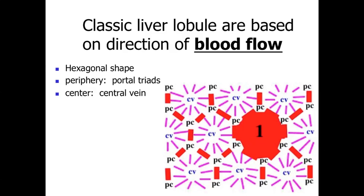The classic liver lobule is based on the direction of blood flow. It is a roughly hexagonal structure repeated across the liver. At the periphery—at each point of the hexagon—we have a portal triad with its portal canal, dumping materials into the sinusoids. The hepatic artery and hepatic portal vein dump materials into the liver sinusoids, which drain through to the central vein at the center of the structure.